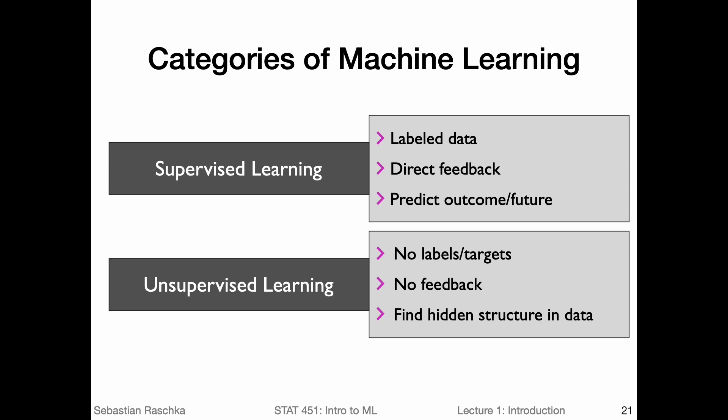We just talked about supervised learning, which deals with labeled data. Now, another category of machine learning is unsupervised learning. And in unsupervised learning, we don't have any labels, or we don't have any target information. And we also don't have any real feedback. So we can't really measure how well the algorithm is doing and updating based on that. So the goal really here is to find a hidden structure in the data. So to have unlabeled data, and maybe find some patterns in the data, that's kind of the goal of unsupervised learning.